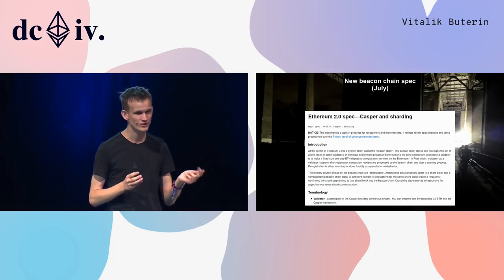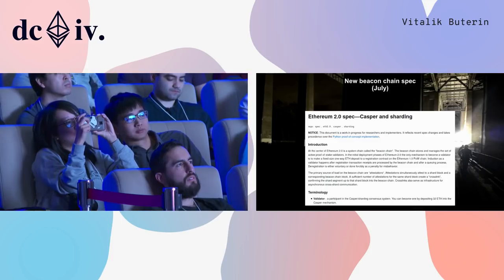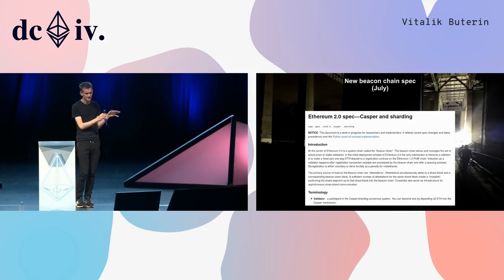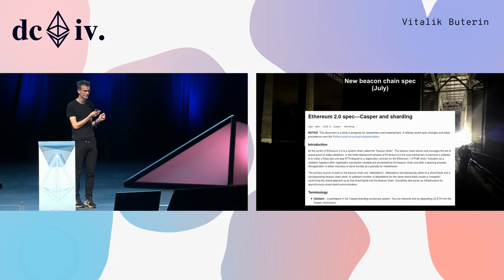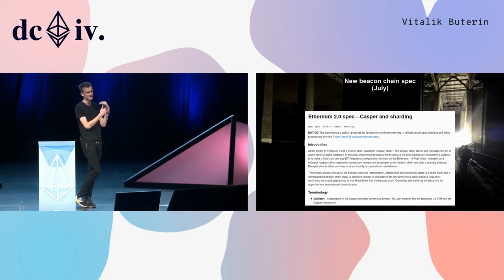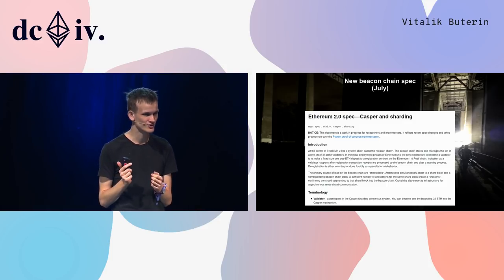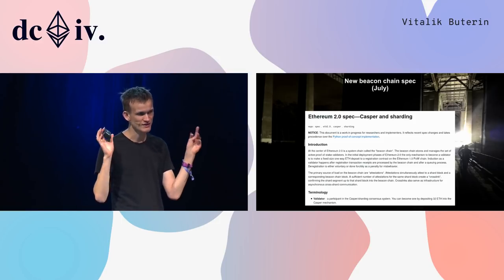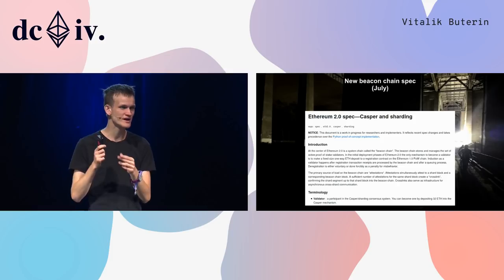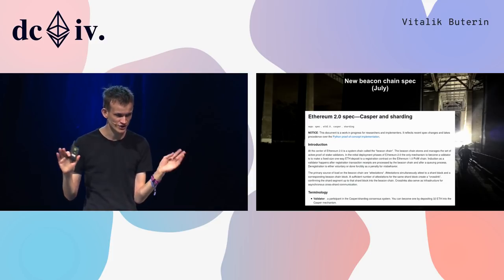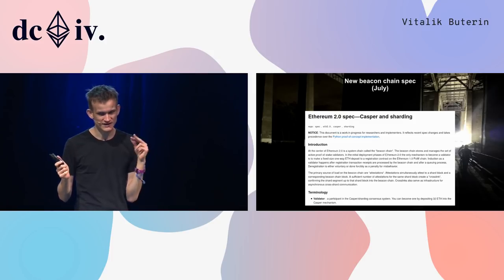In June we made a difficult but really valuable decision. On one side, teams were trying to implement hybrid proof of stake — building the Casper FFG implementation as a smart contract inside the existing blockchain with tweaks to the fork choice rule. On the other side, a completely separate group was trying to make a sharding system with a validator manager contract — later renamed the sharding manager contract — on the main chain.